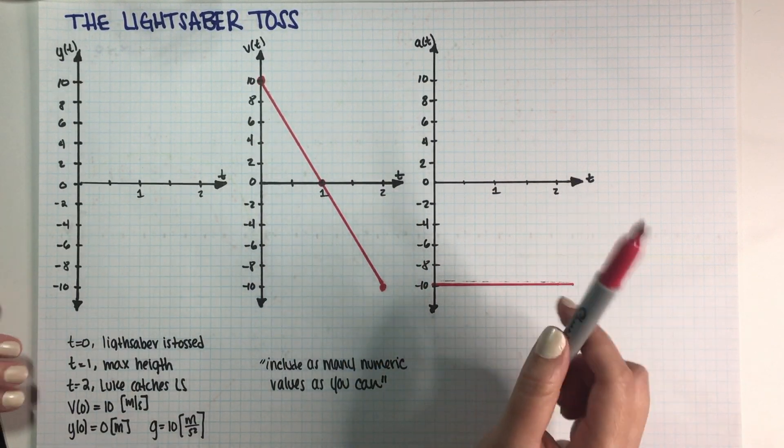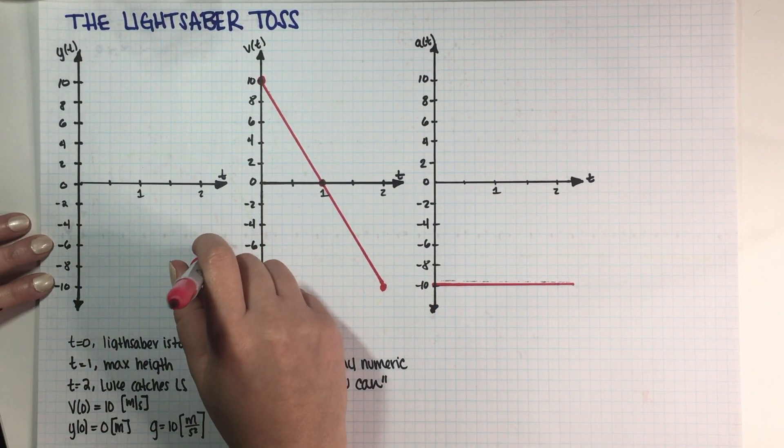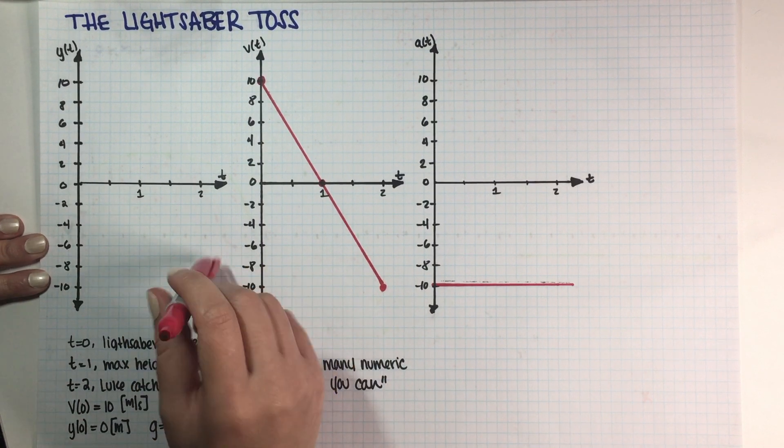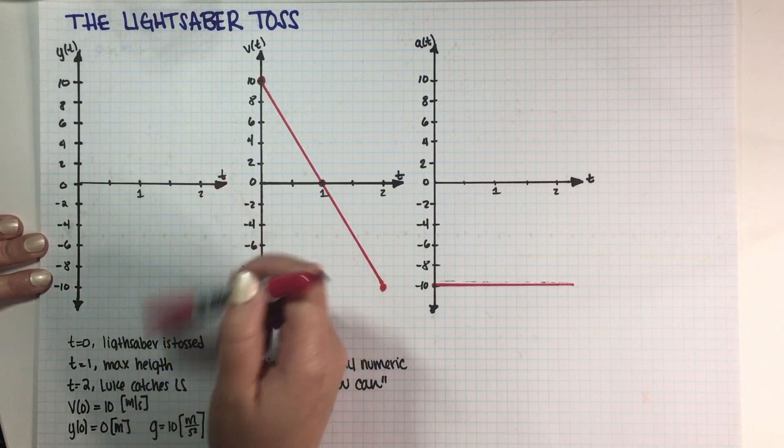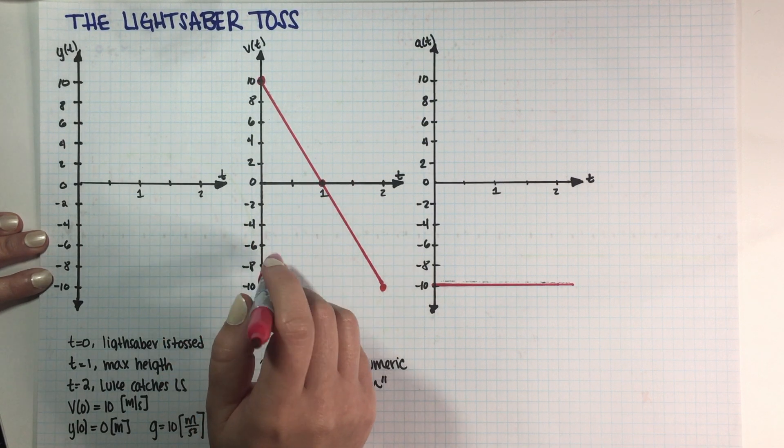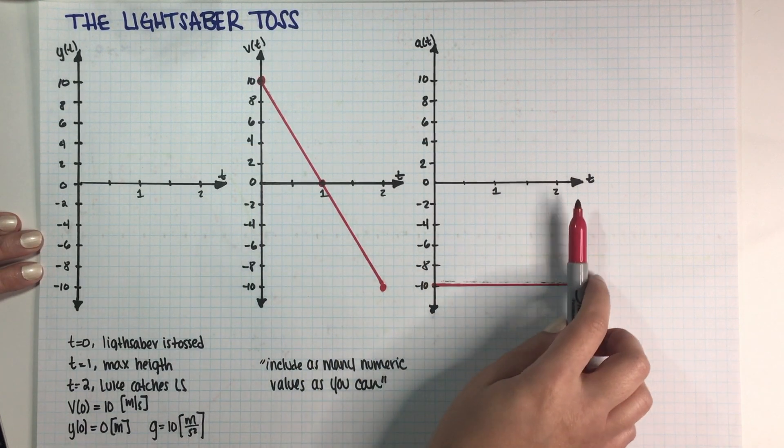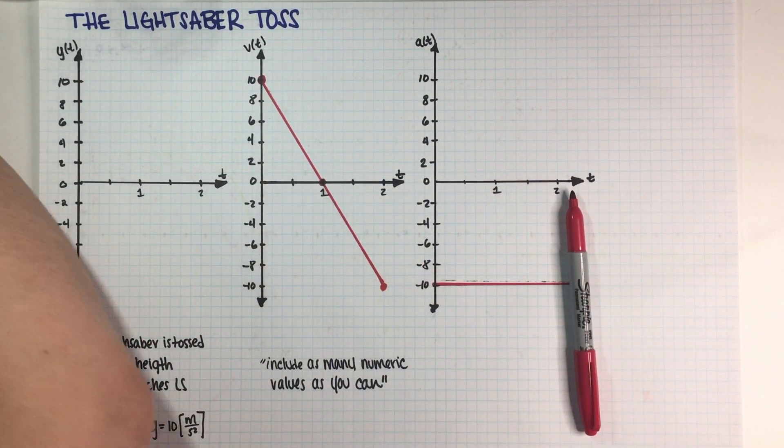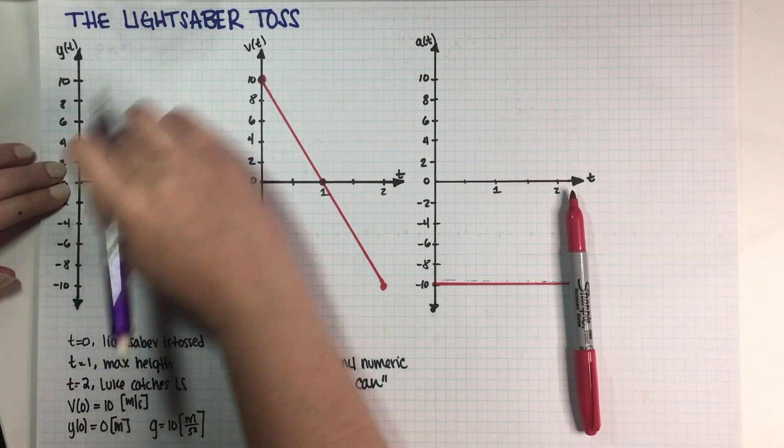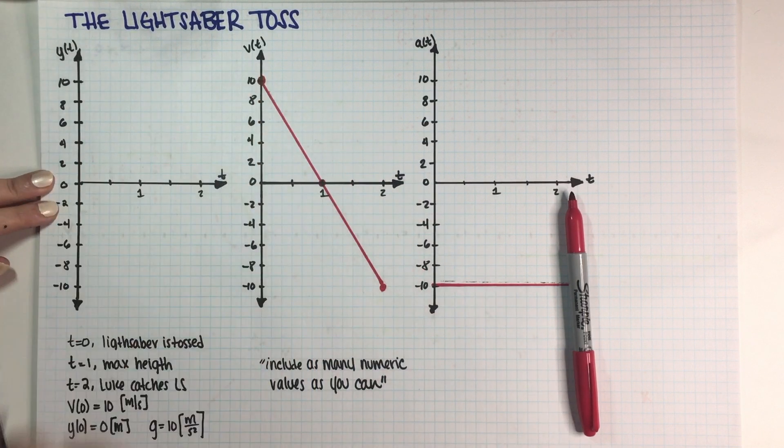And now we need to go from velocity to position. Now this is a slope line, which means that our position is going to be a parabola. And we do know that this slope is negative, so that means that we are going to have a parabola concave down, which makes sense because this is a toss, like when you toss something, it kind of looks like a concave down parabola.